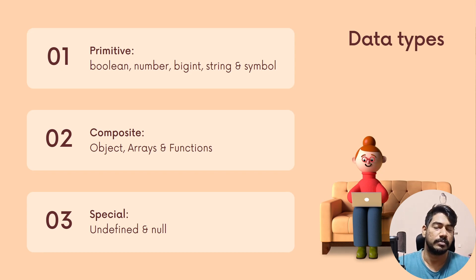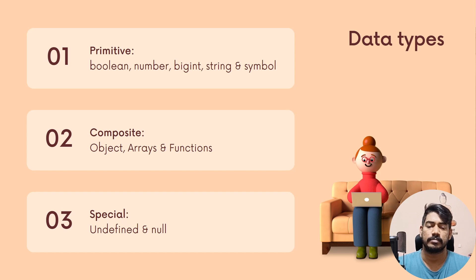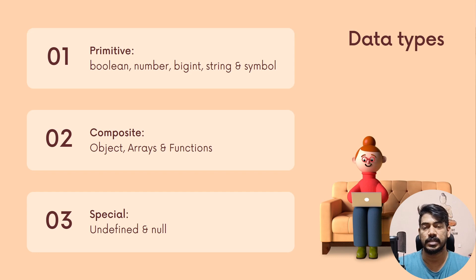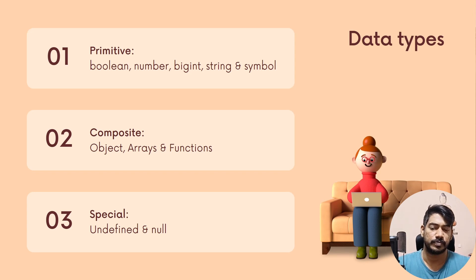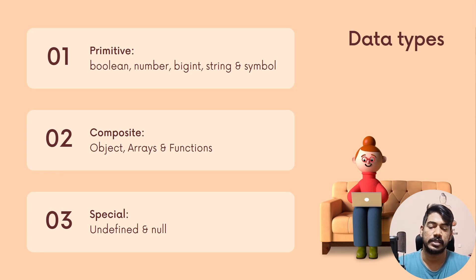BigInt is for very large integers. Then we have string and symbol. Symbol is used for references — you can learn that when doing classes. Most of the time you'll use boolean, number, and string. String we will learn in detail. Then there are composite types like objects.